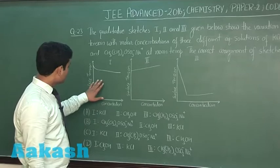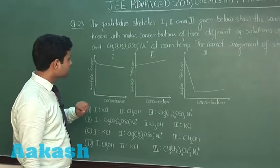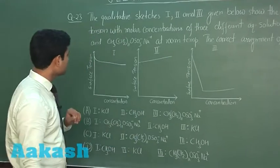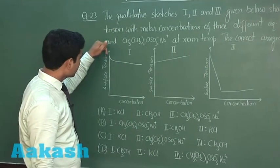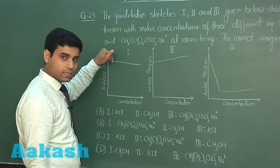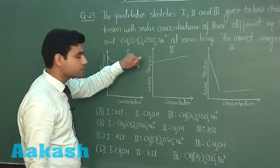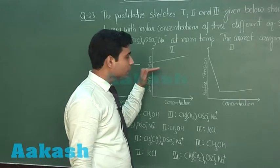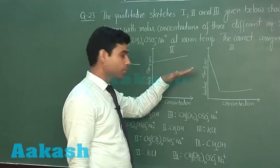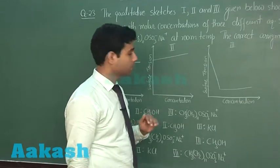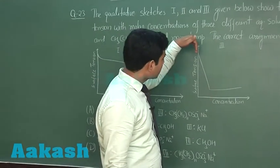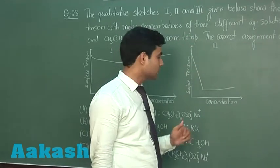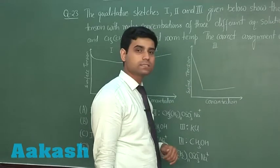This is the first sketch, this is the second sketch and this is the third sketch. In this sketch, we can see the surface tension first decreases and then again decreases slightly. In this sketch, the surface tension is constantly increasing, but increases very slowly. In this sketch, the surface tension decreases constantly, rapidly surface tension is decreasing and then we have a slight increase in surface tension.